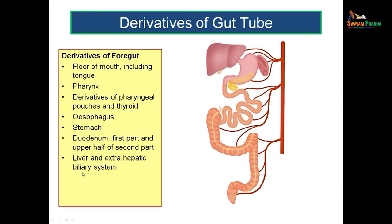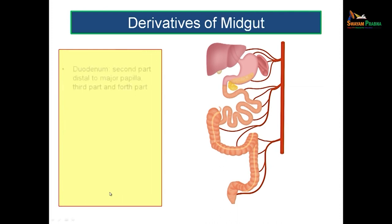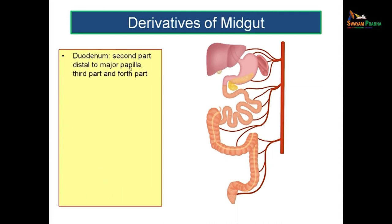Other derivatives of the foregut include the liver and the extrahepatic biliary system, the pancreas, and the respiratory system. The foregut extends up to the second part of the duodenum distal to the major papilla — that means up to the opening of the major duodenal papilla.